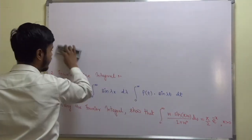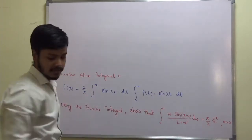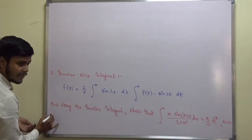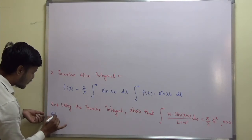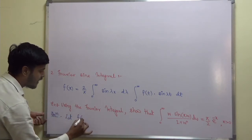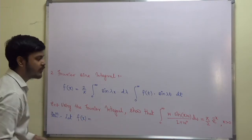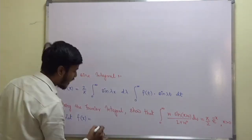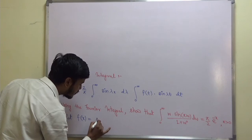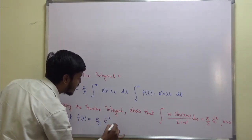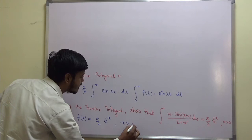First of all, let us write down the given function. Solution: let f(x) = (π/2) e^(−x), where x is greater than zero.